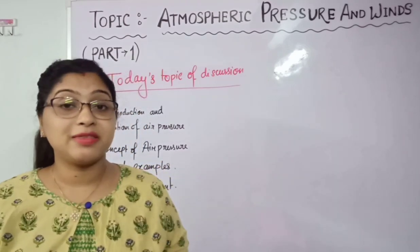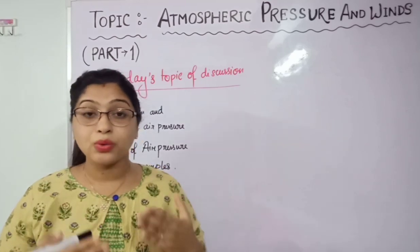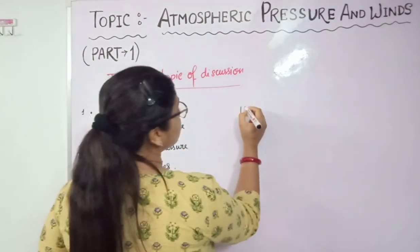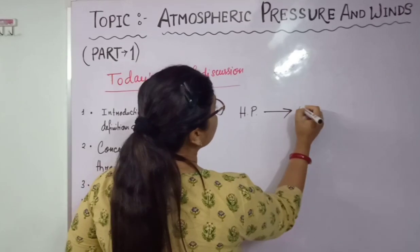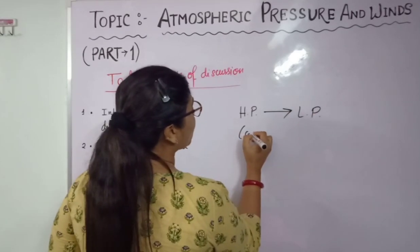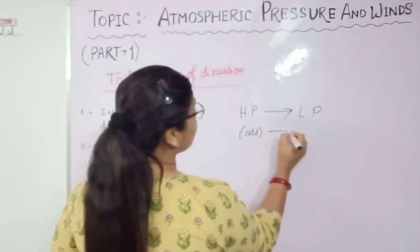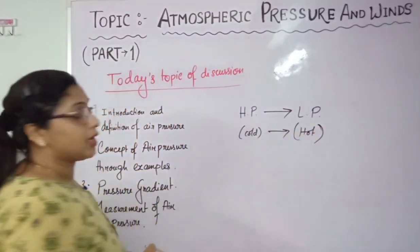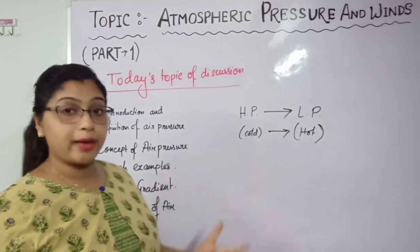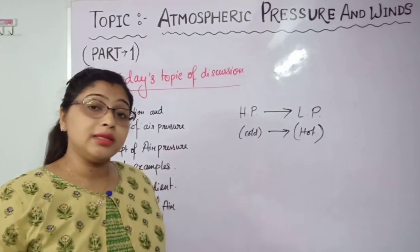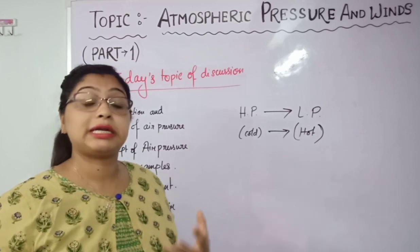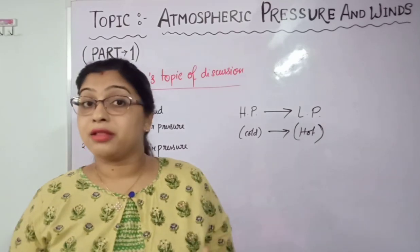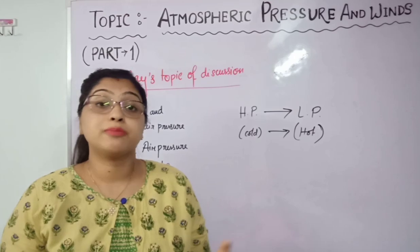Air always blows from high pressure to low pressure areas. High pressure means a cold area — where the temperature is comparatively less — and air blows toward the area where there is more temperature. The movement of air depends on the temperature of the atmosphere. The distribution of heat is not equal everywhere; it differs from place to place — somewhere very high temperature, somewhere very low temperature.